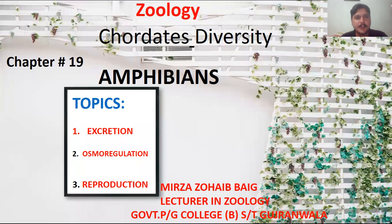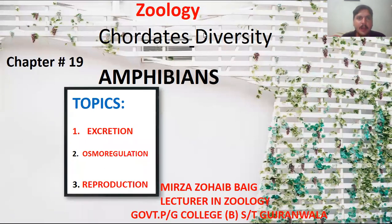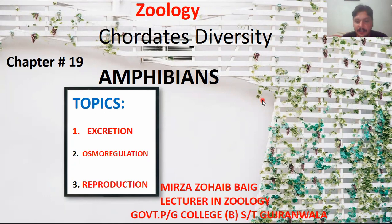Assalamu alaikum. My name is Mirza Zuhiibig and I'm going to explain the book Zoology, the part name is Cordial Diversity, chapter number 19, chapter name is Amphibians. There are three basic topics that will be explained in this video: excretion, osmoregulation, and reproduction. Bismillahirrahmanirrahim.